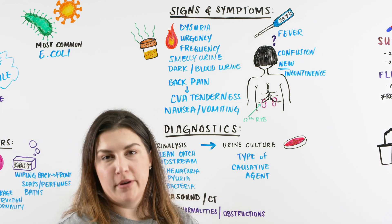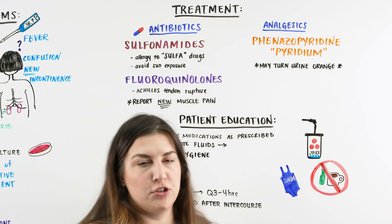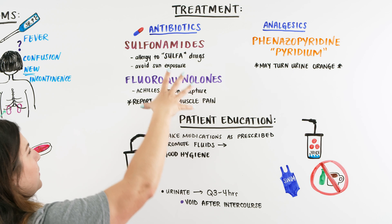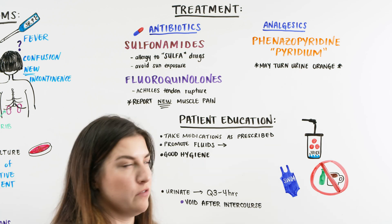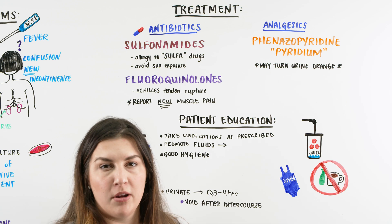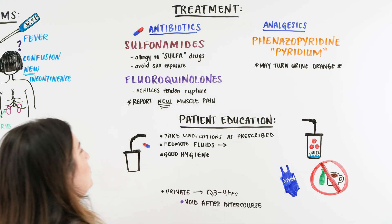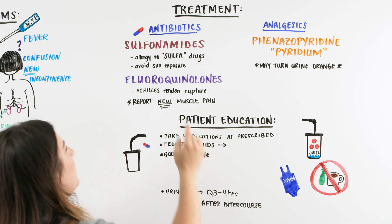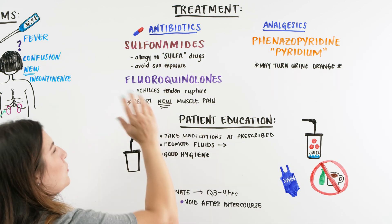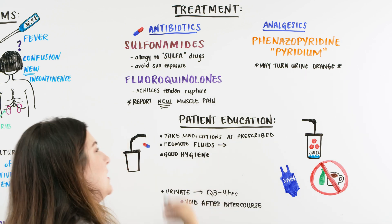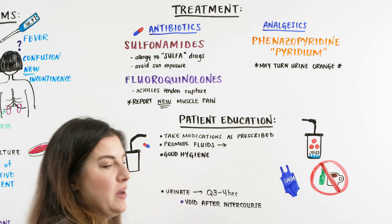Once we've identified a UTI, we can talk about treatment. We treat specifically to the causative bacteria, but typically we give antibiotics. The most common are the sulfonamides — the sulfa drugs. If they're not allergic to sulfa drugs, we can prescribe those, but we need to teach the patient about allergic reactions: swelling of the lips, tongue, or throat, hives, and itchiness. They should also avoid sun exposure because the sulfa drugs make patients photosensitive. There are also fluoroquinolones we can give. The key NCLEX point is Achilles rupture — the patient needs to report any new muscle pain so we can potentially switch their antibiotic.